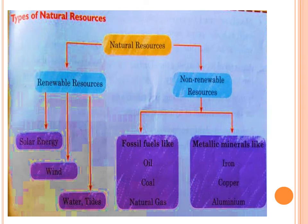Now, we have different types of natural resources. We have renewable resources and non-renewable resources. Renewable resources means which can be produced continuously in nature and cannot be exhausted fully. In that we have solar energy, wind, and water. If you are using solar energy, it is not going to exhaust fully — it will be continuously produced. Similarly, wind and water are not going to exhaust fully; they are produced continuously. So these are renewable resources.